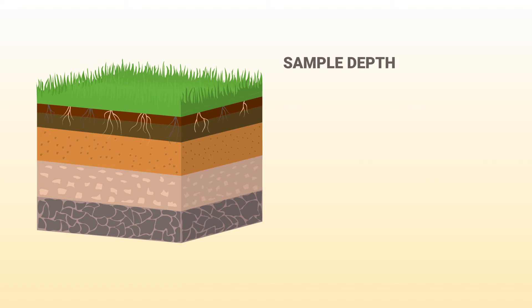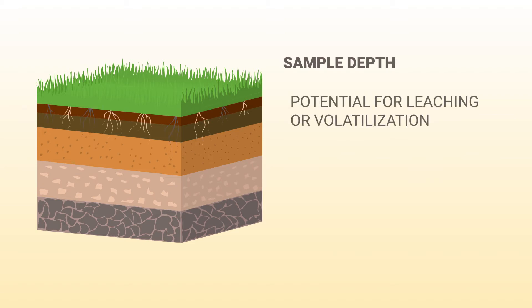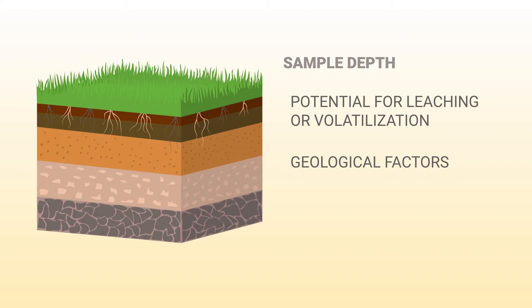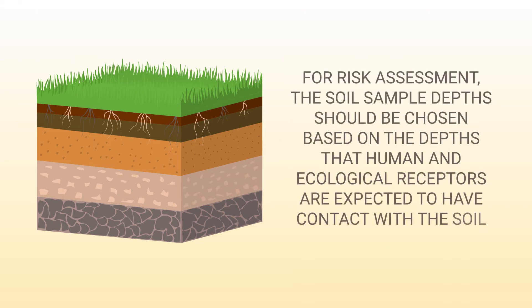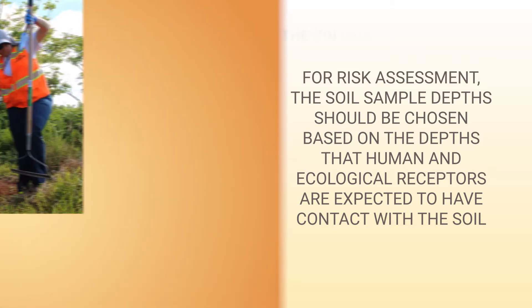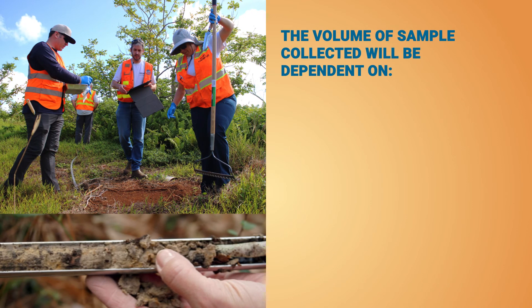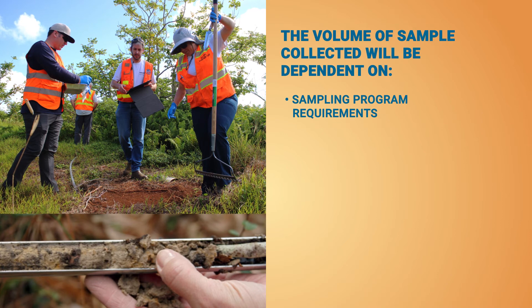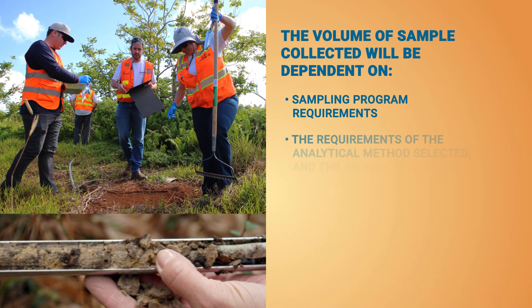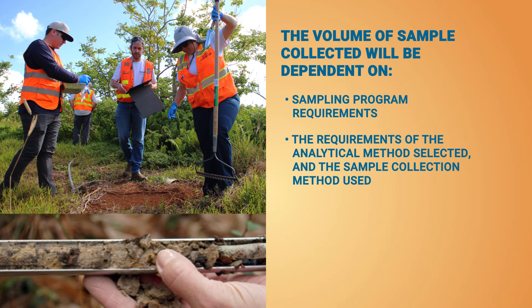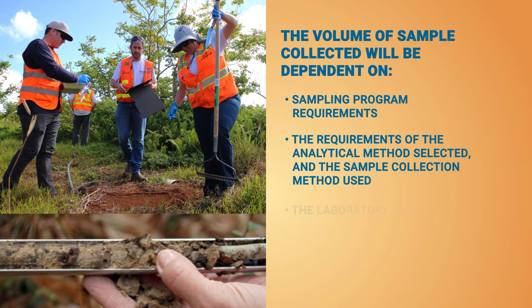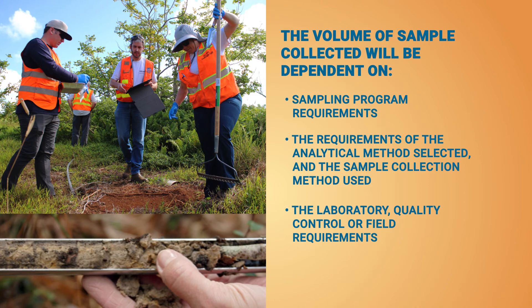Target sample depth can vary based on various factors: the potential for leaching or volatilization of chemicals of potential concern in soil; geologic factors including soil type, depth to groundwater, and depth to bedrock or fill; and for risk assessment, the soil sample depths should be chosen based on the depths that human and ecological receptors are expected to have contact with the soil. The volume of soil collected will be dependent on sampling program requirements such as ISM, the requirements of the analytical method selected, the sample collection method used, and the laboratory quality control or field requirements.